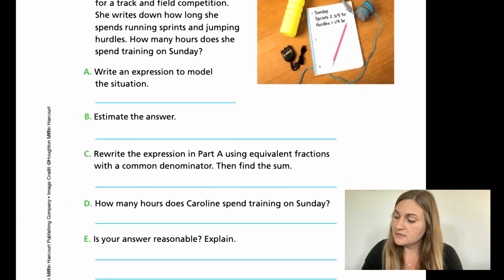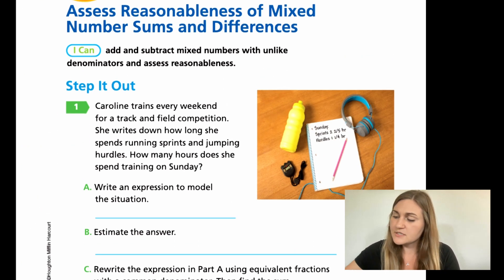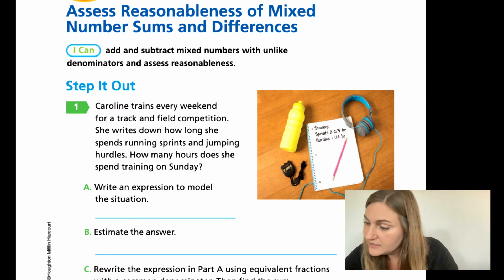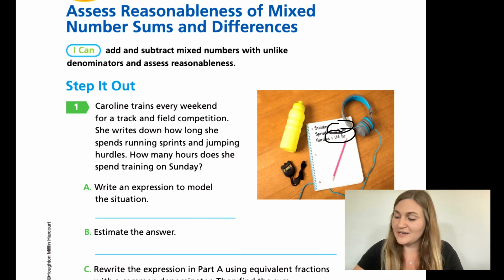Jumping into the lesson on page 157, it starts out with a problem that says Caroline trains every weekend for a track and field competition. She writes down how long she spends running sprints and jumping hurdles. How many hours does she spend training on Sunday? The sprints are 2 and 2/5 hours, and the hurdles are 1 and 1/4 hours.